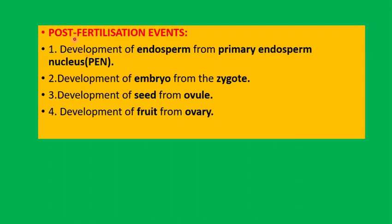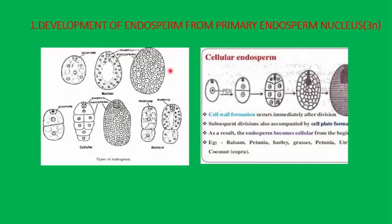Now let's look at the post-fertilization events. In post-fertilization events: first is the development of endosperm from primary endosperm nucleus; second is the development of embryo from the zygote; third is the development of seed from the ovule; and finally the development of fruit from the ovary. We are going to study the first two — development of endosperm and development of embryo.